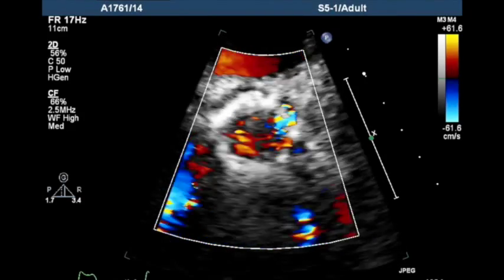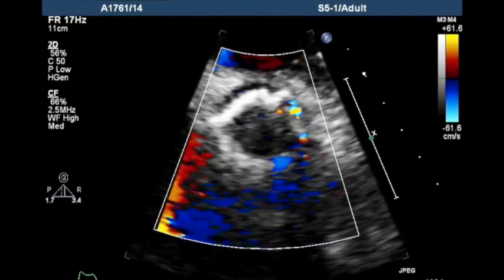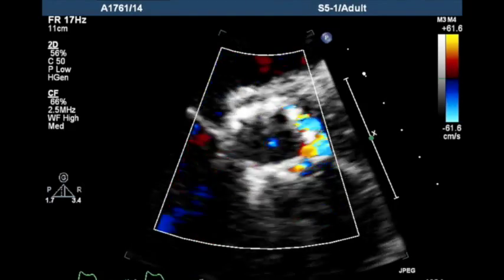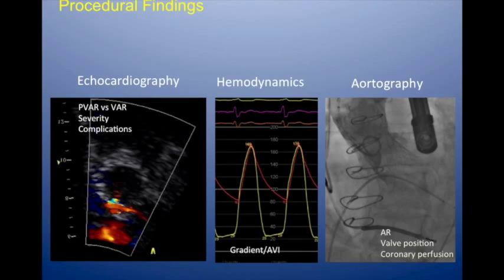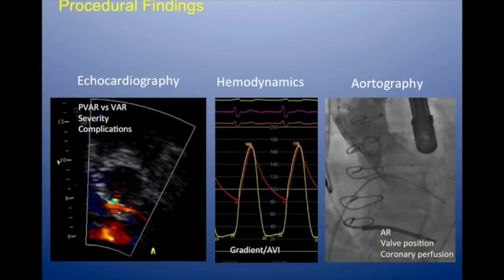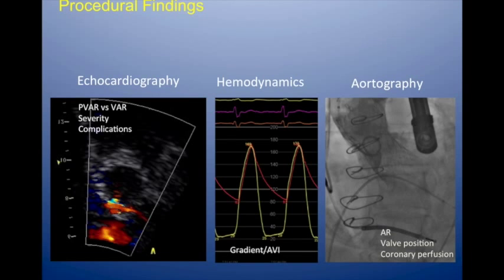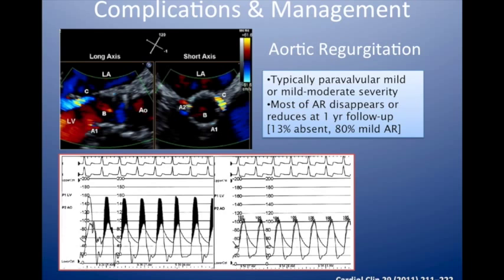That's one of the better ways of grading paravalvular AR without spending too much time. At the end of the procedure, we measure the gradient using pigtails in the ventricle and aorta, and look to see whether the gradient has disappeared. We also look at the separation between the systemic diastolic pressure and the LV end-diastolic pressure — good separation means paravalvular or aortic regurgitation is very mild.